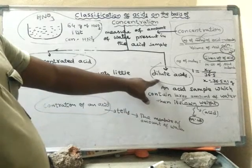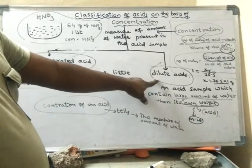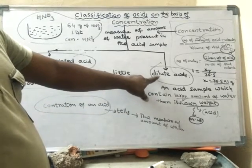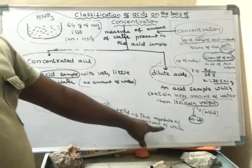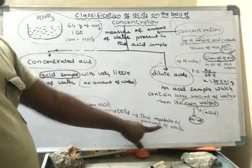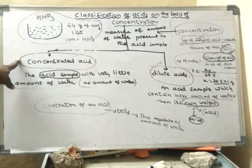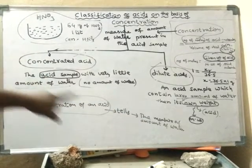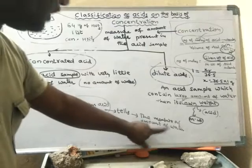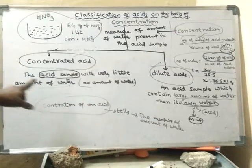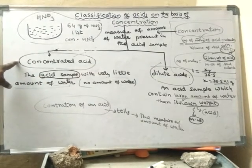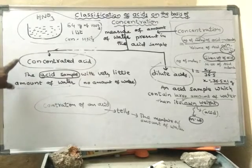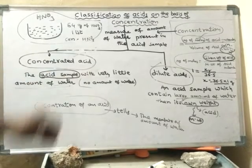If the amount of water is more, then its concentration is less, hence it is said to be dilute acid. Sorry — if the amount of water is less, then the concentration of acid will be more. In that case, it is said to be concentrated acid.